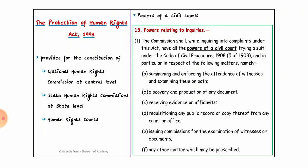This article discusses the Protection of Human Rights Act 1993, which provides for the constitution of the National Human Rights Commission at the central level, State Human Rights Commission at the state level, and Human Rights Courts. Regarding powers related to inquiry, the commission, while inquiring into complaints under the act, has all the powers of a civil court.